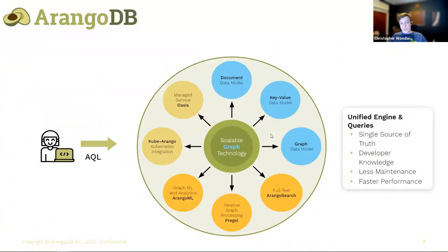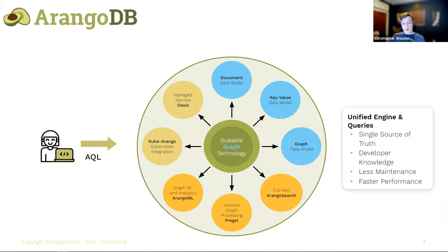ArangoDB is a native multi-model database, meaning we support multiple data models natively. You can use ArangoDB as a document data model with fully compliant JSON documents, as a key-value store, or combine all of these with an edge collection — which defines relationships — to be a graph data model. We are also a scalable graph database, which is fairly unique in the graph world, staying useful in production beyond small single-instance servers.